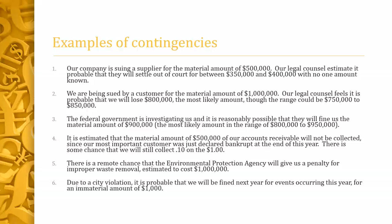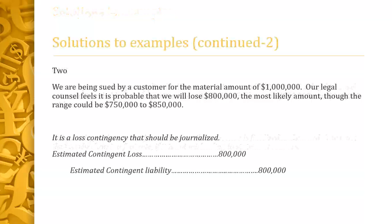Number two: we're being sued by a customer for a material amount of $1,000,000. Our legal counsel feels it is probable we will lose $800,000 — the most likely amount — with a range of $750,000 to $850,000. We've got one amount singled out as the most likely, it's probable, and it's certainly a material amount. We're hitting all the highest levels, so we should see a journal entry: debit estimated loss, credit estimated liability for $800,000. If we didn't know a particular most-probable amount, we would have gone with the lowest end of the range — $750,000 — and used that in the journal entry.